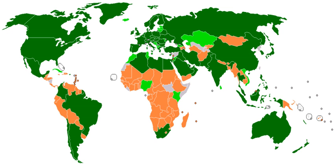The IEC is made up of members called national committees, and each NC represents its nation's electrotechnical interests in the IEC. This includes manufacturers, providers, distributors and vendors, consumers and users, all levels of governmental agencies, professional societies and trade associations, as well as standards developers from national standards bodies. National committees are constituted in different ways — some NCs are public sector only, some are a combination of public and private sector, and some are private sector only. About 90% of those who prepare IEC standards work in industry.